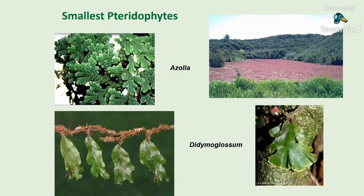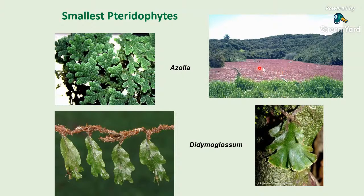These are the smallest pteridophytes. Azolla is a free-floating aquatic fern — in the youngest stage it is green with two rows of leaves, and at maturity it shows a reddish-brown structure. They are referred to as biofertilizers because in the leaf pocket, Anabaena and Nostoc blue-green algae are symbiotic, and farmers use them for increasing nitrogen content in their fields.